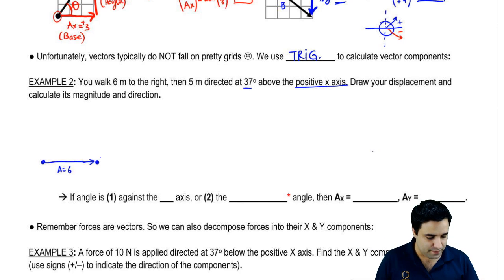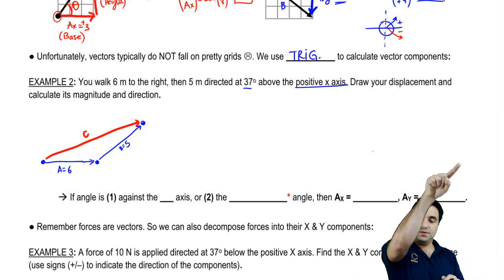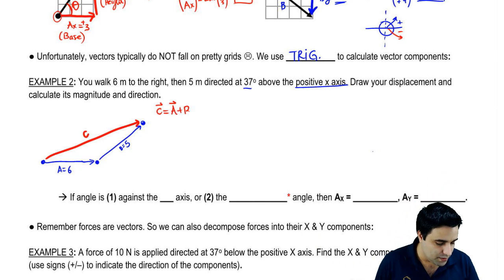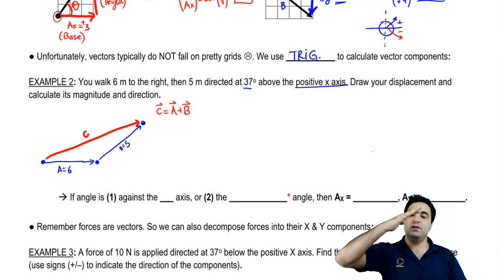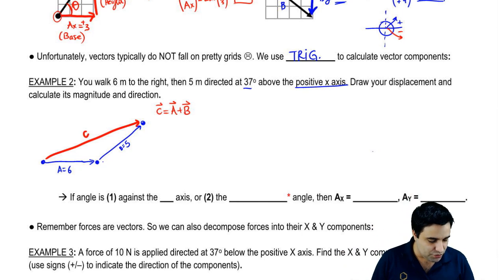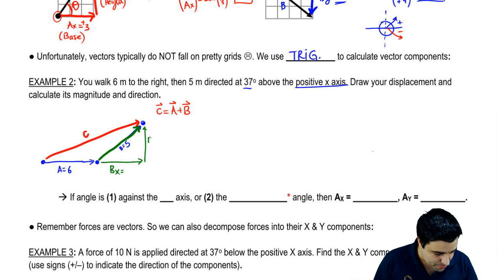You walk six meters to the right, then you walk five meters directed at 37 degrees above the positive x-axis. Let's draw this real quick. I'm going to call this first leg here a equals six, and then tip to tail, I'm just going to connect these things. Then I'm going to walk five like this, and this is b equals five. And then I want to know what is the total displacement. So total displacement is an arrow from the very beginning to the very end. It looks like this, and I'm going to call that arrow c. And I can say that c is the vector addition of a plus b. It's not going to be 11. Remember what we just talked about. If a vector is at an angle, it has to be decomposed into its components. So this b here has to be changed into bx and by.